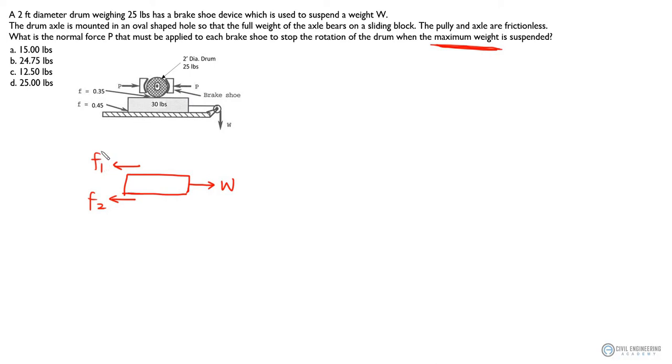So how does this friction one come from? So you will have your drum weight W1. Let's assume that's W1 and it will create a normal force N1, right, because the full weight of the drum is transferring to the block. So N1 equals to W1, right, and then F1 is mu1 times N1, which is 0.35 times W1, which is 25 pounds. So that's 8.75 pounds.